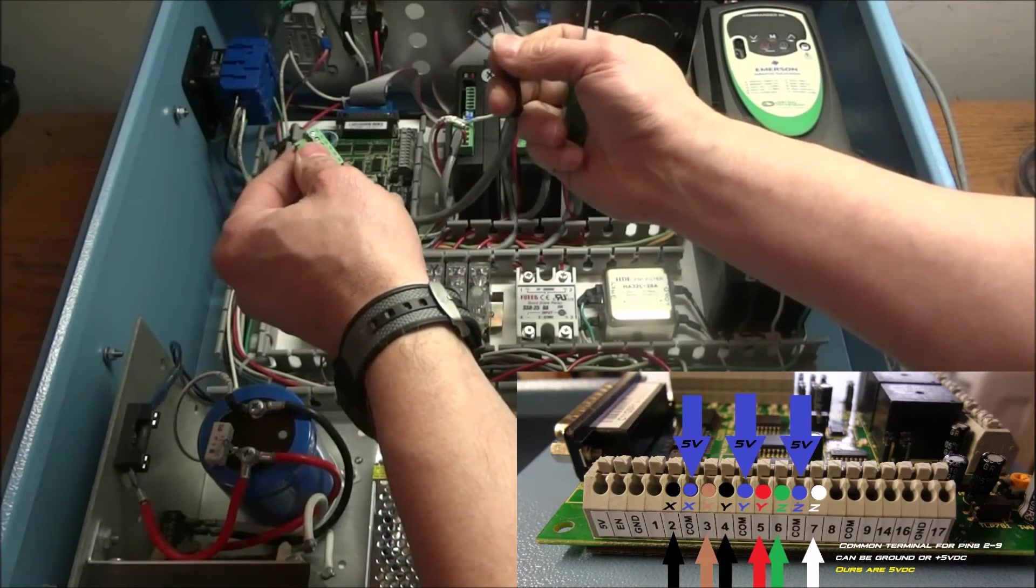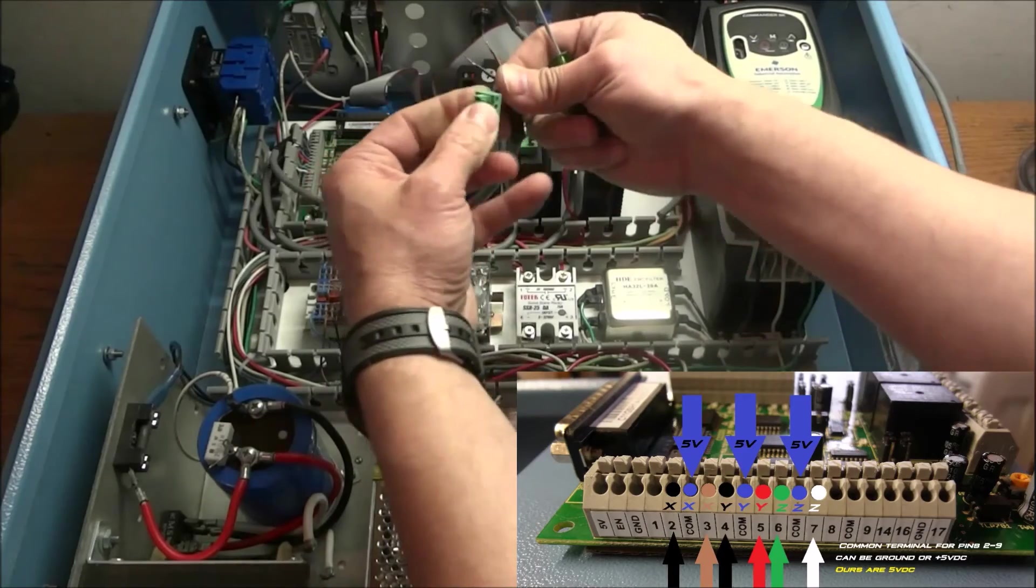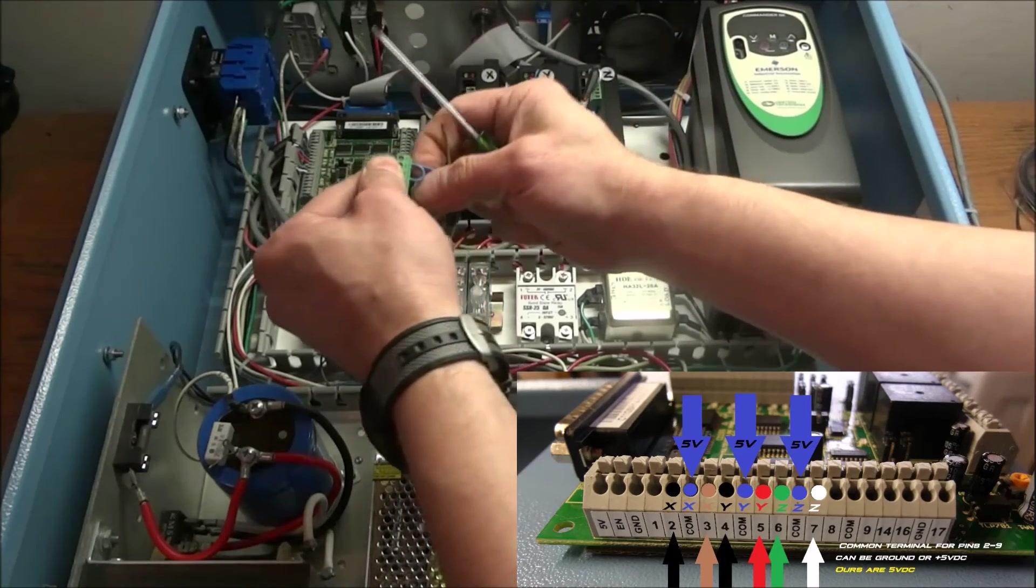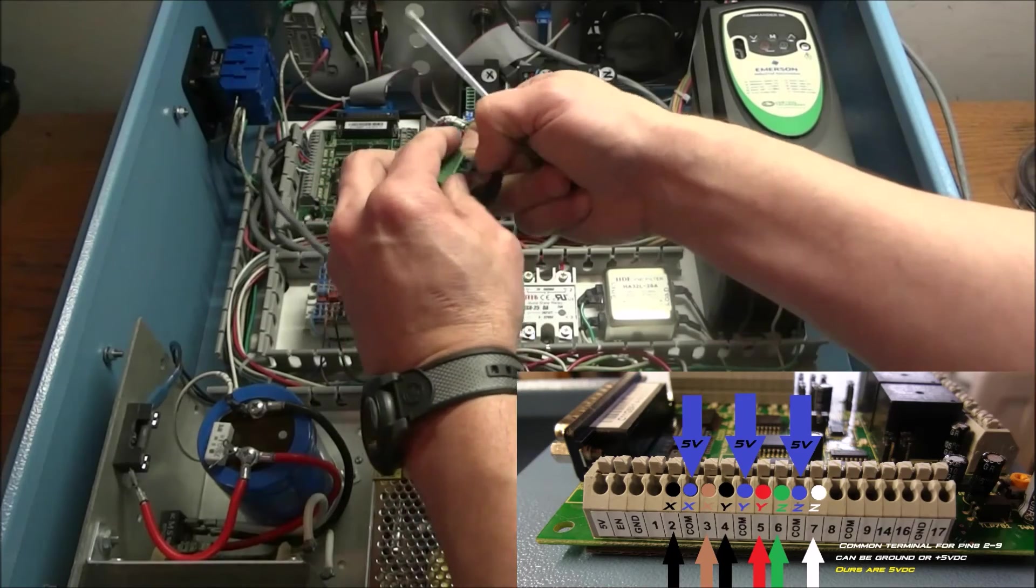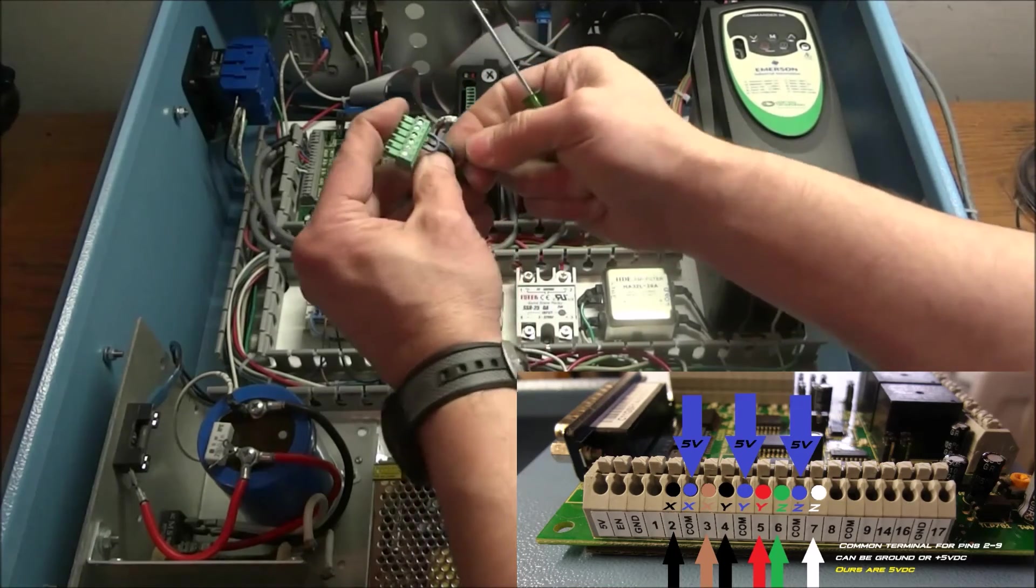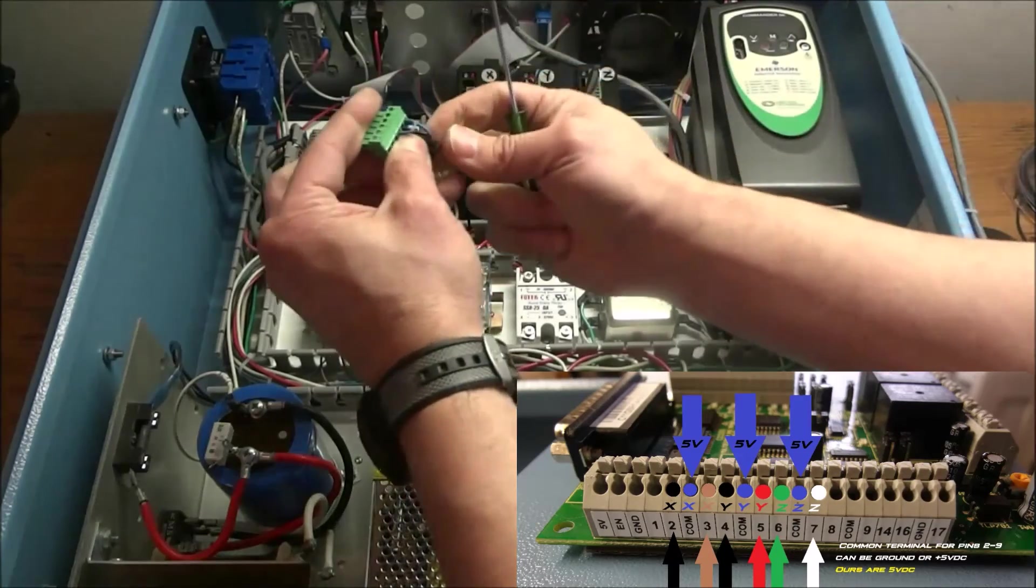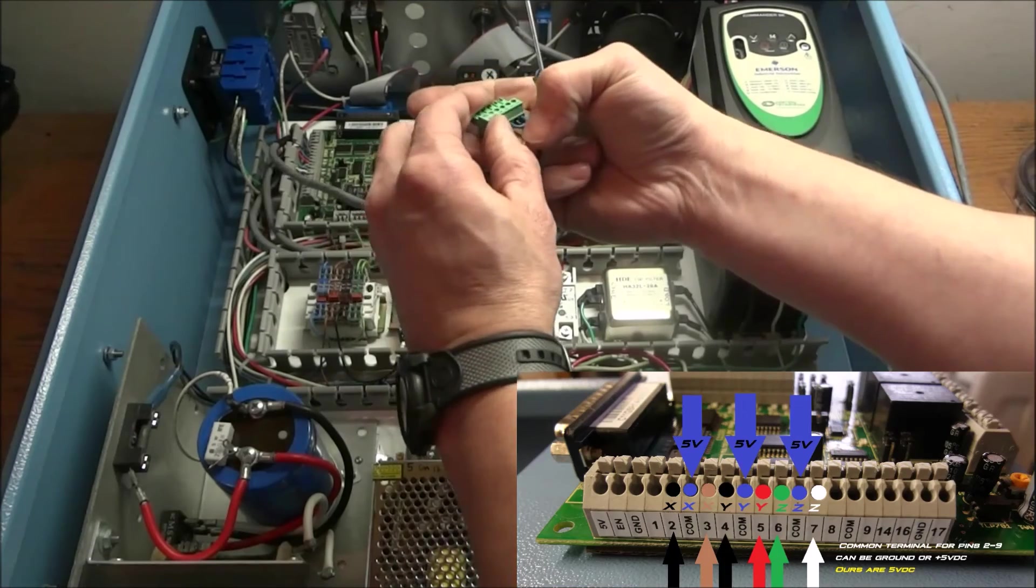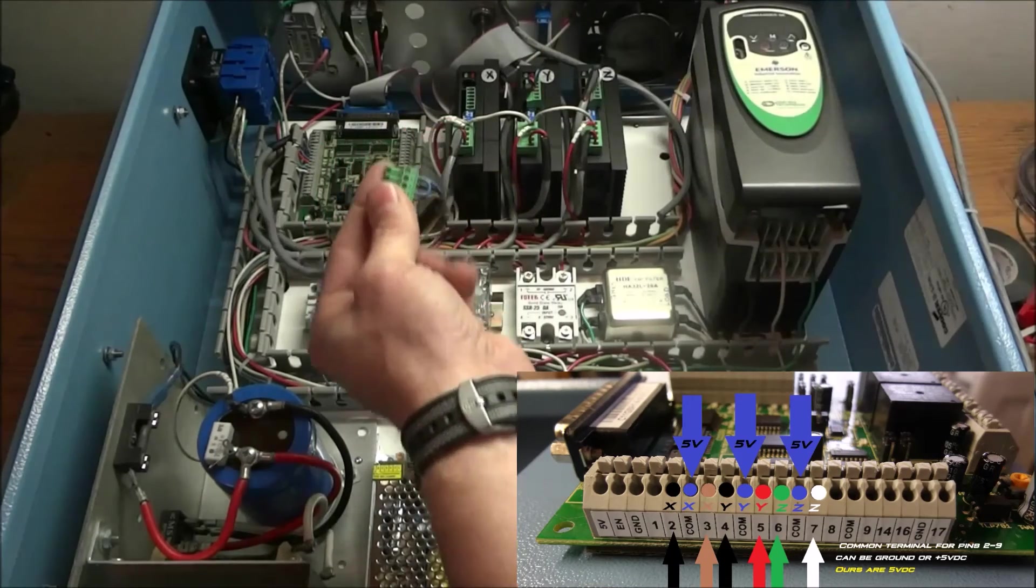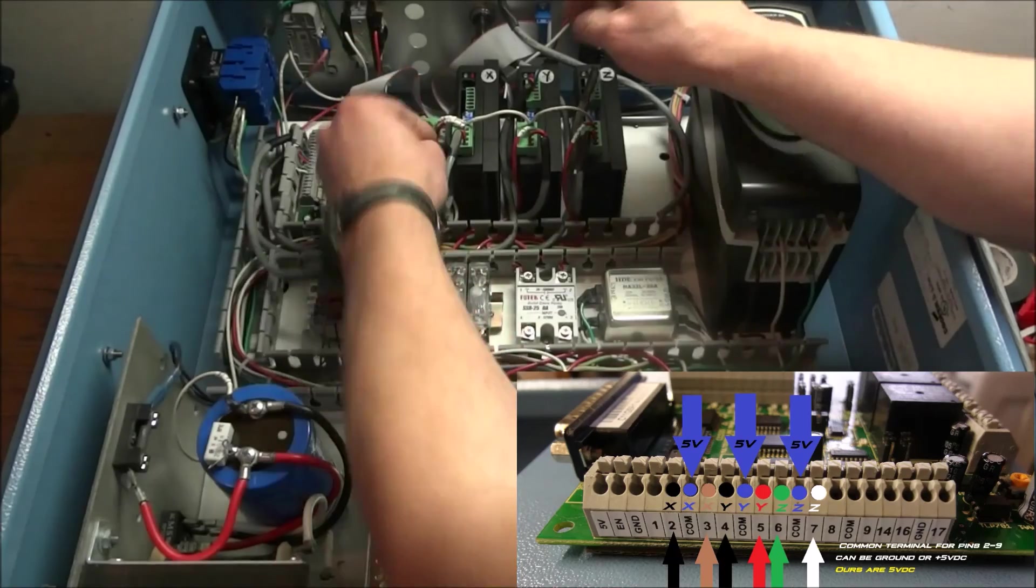And then we have our blue right here. Okay. And then black is our step or pulse negative. And then brown is our direction negative. All right. Take care of that. And we can bring it up here. How about that. Okay. So you can see, we have these connections made to our breakout board.